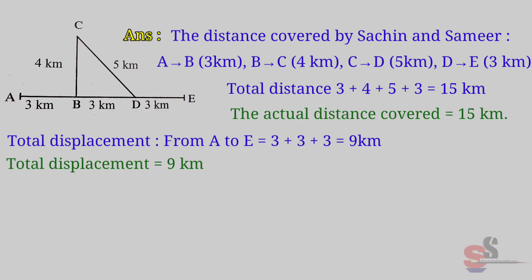Now we will see speed. We know speed is equal to distance upon time. Distance is 15 km and given time is 1 hour. Therefore, speed is equal to 15 km per hour.